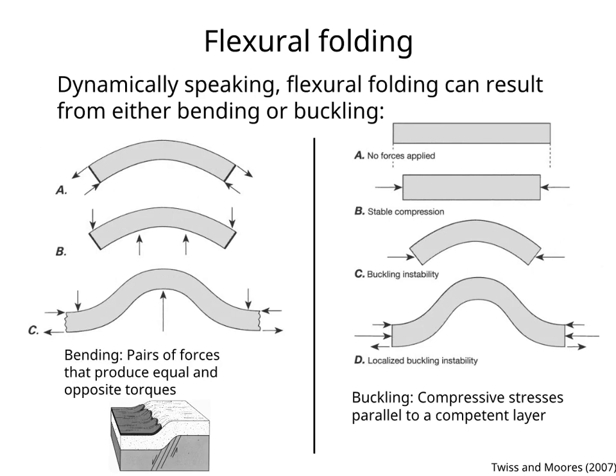In bending, pairs of forces that produce equal and opposite torques generate the fold. A monocline above a normal fault in basement is a good example.